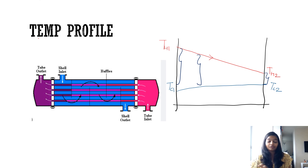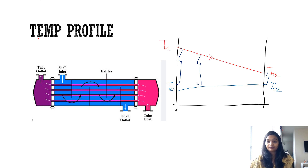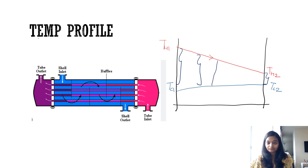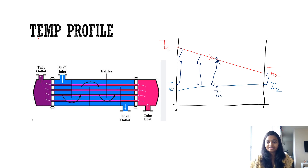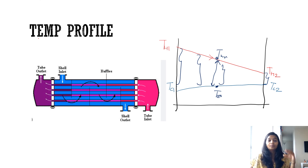In counter flow or cross flow, the temperature difference at each and every point keeps on changing. Now what happens if we use arithmetic mean? If we use arithmetic mean, the total temperature difference we get is approximated as TH1 and TH2 indicating the hot mean, and TC1 and TC2 indicating the cold mean. This particular difference is used when we take the arithmetic mean, but this will give us erroneous results.